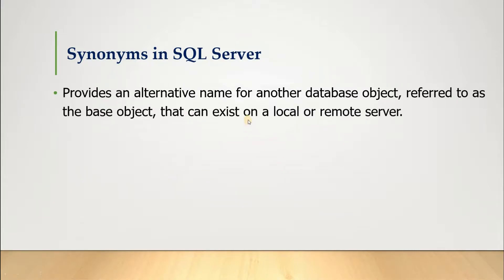A synonym provides an alternative name for another database object, referred to as the base object, that can exist on a local or remote server. So a database object can be on a remote server or on a local machine, and for that object we provide an alternative name — an alias name — and that alias name is called a synonym.